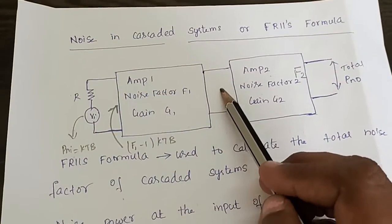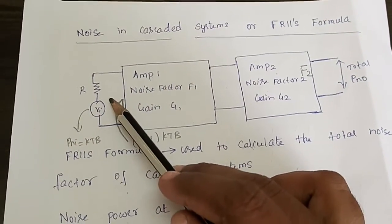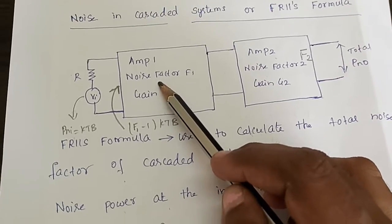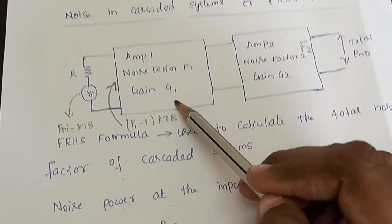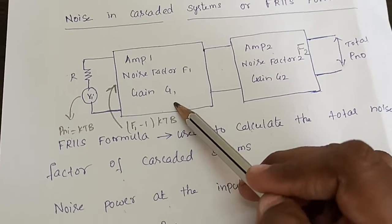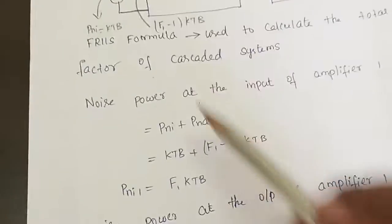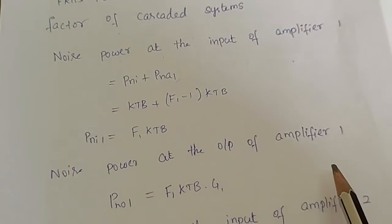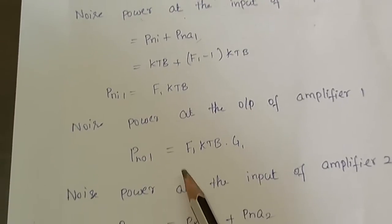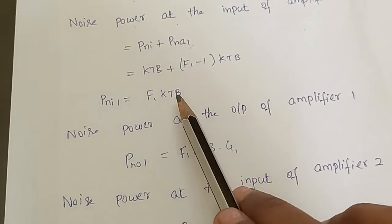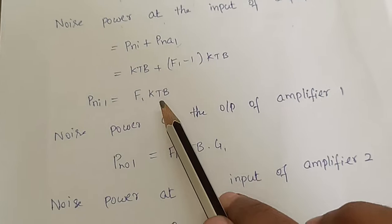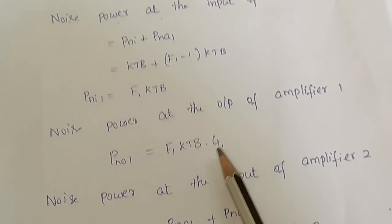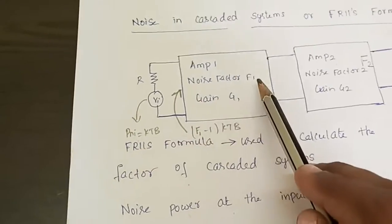Now we find the noise power at the output of Amplifier 1. When this input is passed through the amplifier, the noise power gets multiplied by the gain of that amplifier. The gain of Amplifier 1 is G1, so the noise power at the output of Amplifier 1, P0_1, is F1·KTB multiplied by G1, giving F1·KTB·G1.